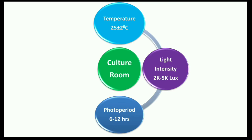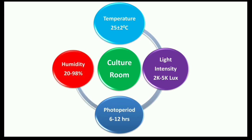Photoperiod is the duration of light required by a particular plant, and it varies from 6 to 12 hours. Humidity is also maintained in the culture room, ranging from 20 to 98 percent. These are the basic environmental conditions which are controlled so that plants can be grown artificially.